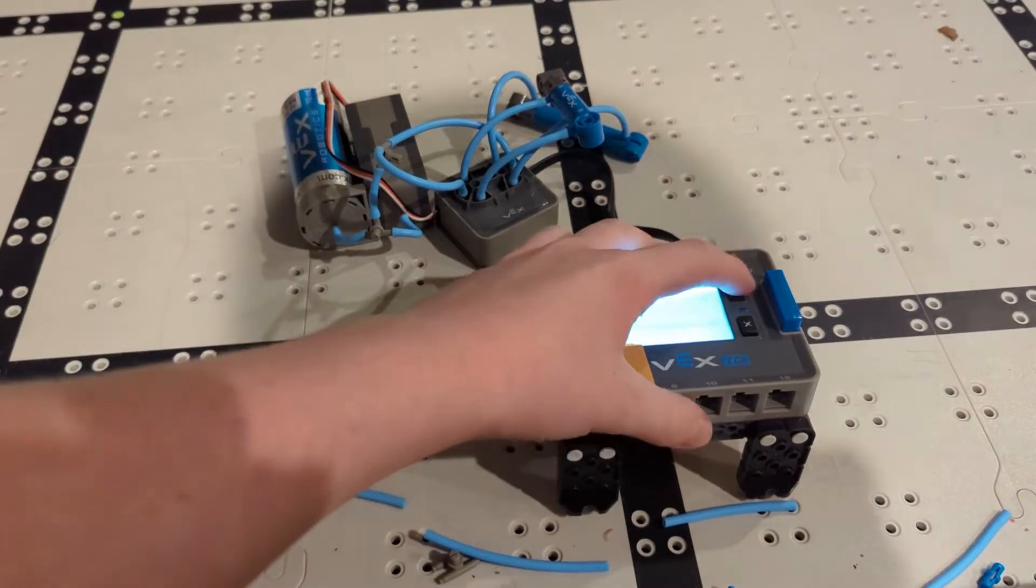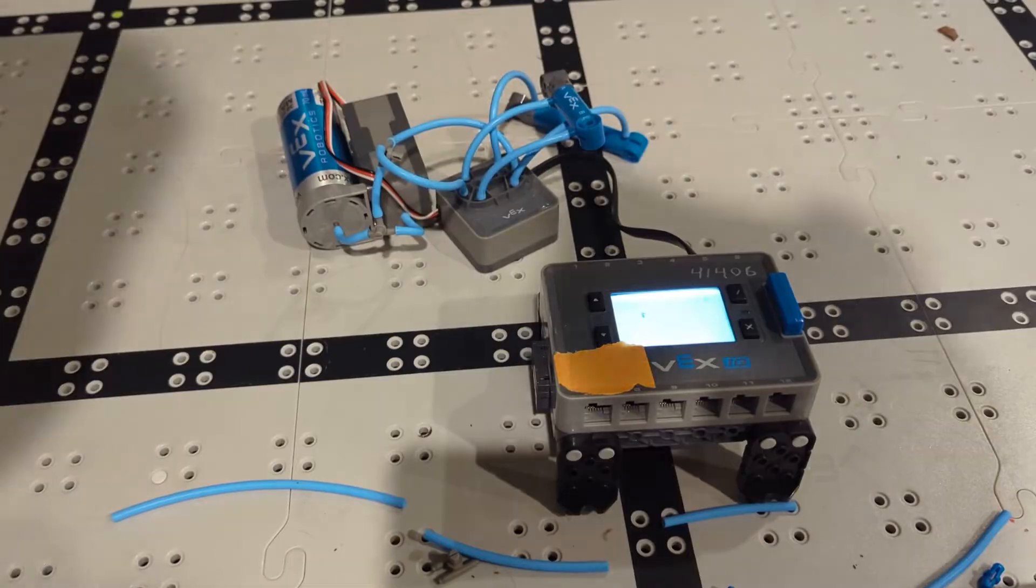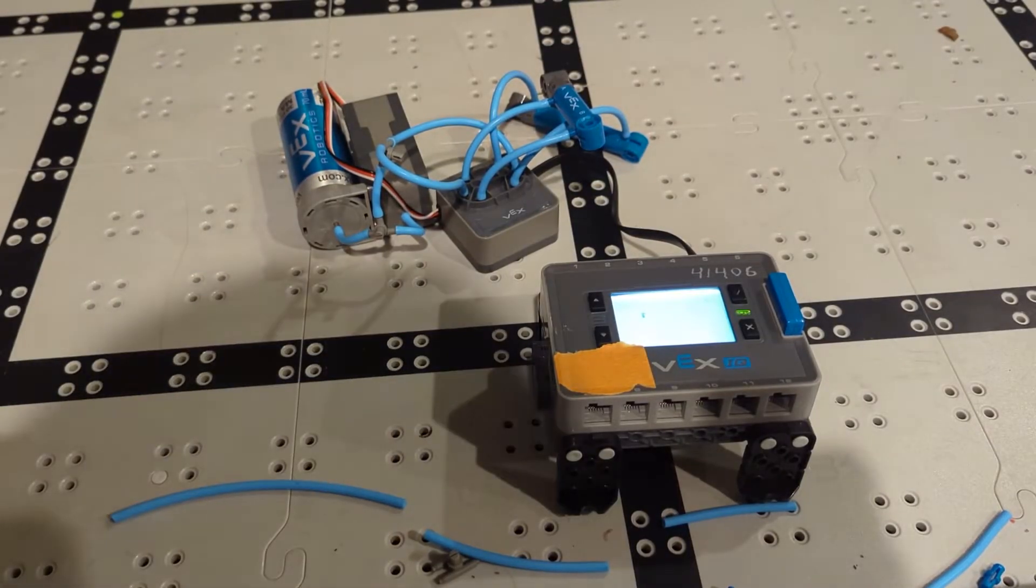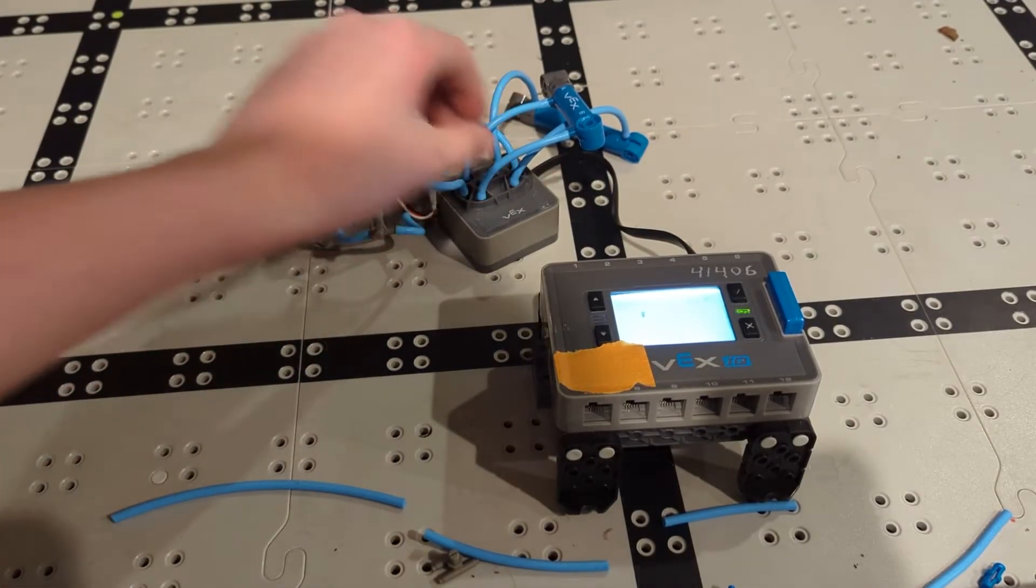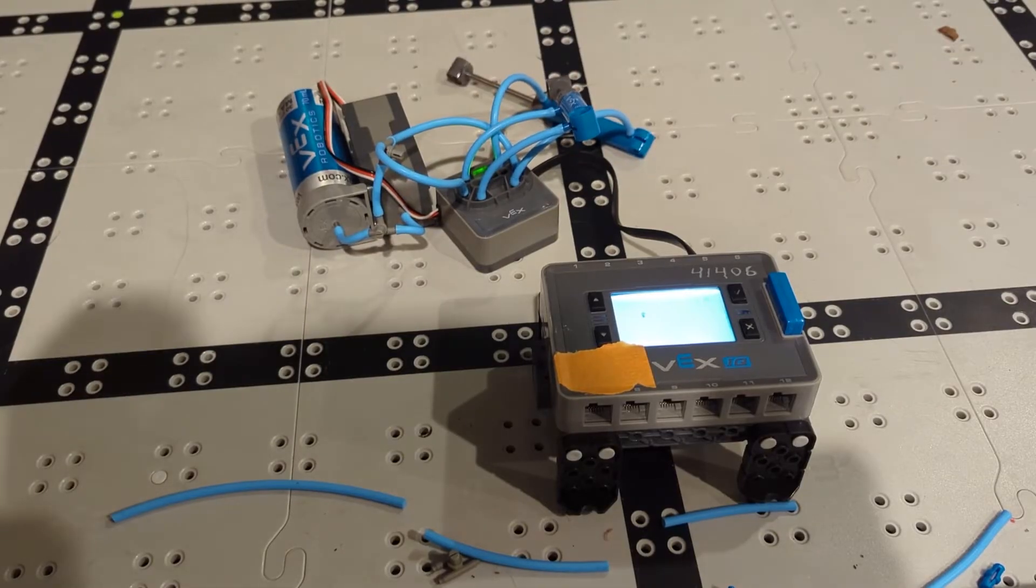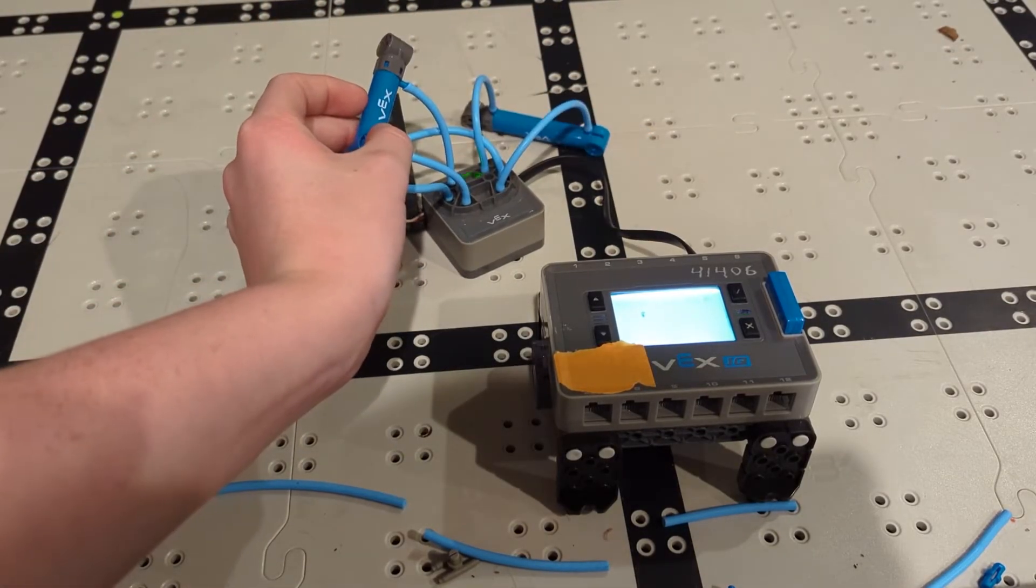All right, now that we've got that coded, we can go into our program and test out our pneumatics. So you can hear the pump running now. And once we press R up, they both extend. And then R down, they retract.